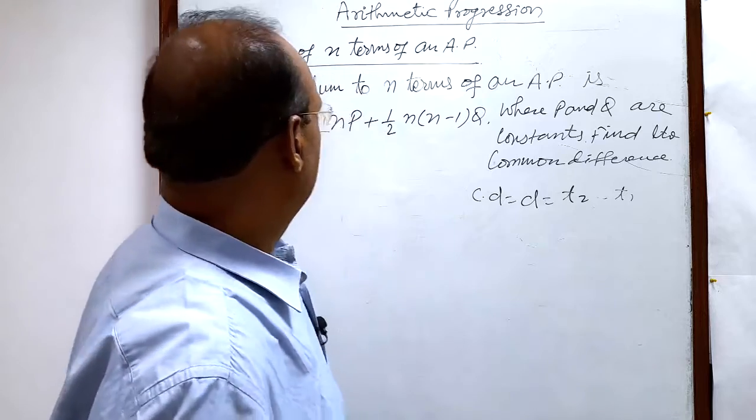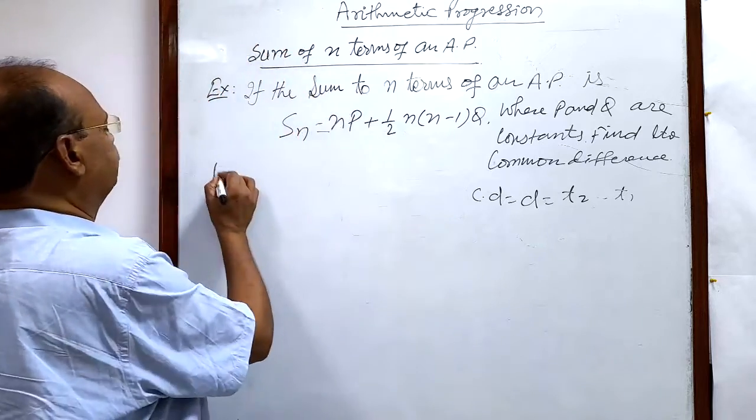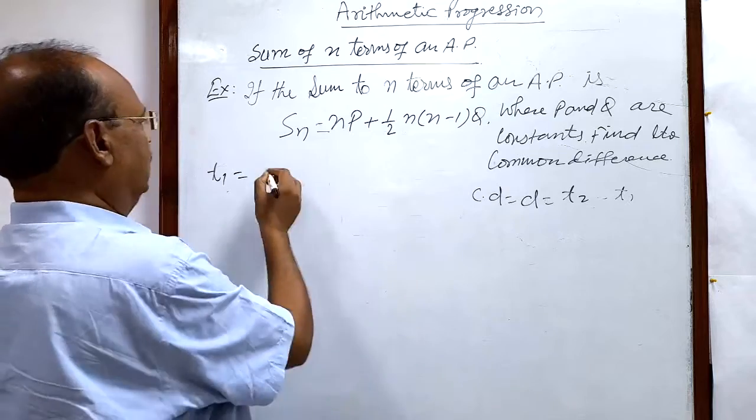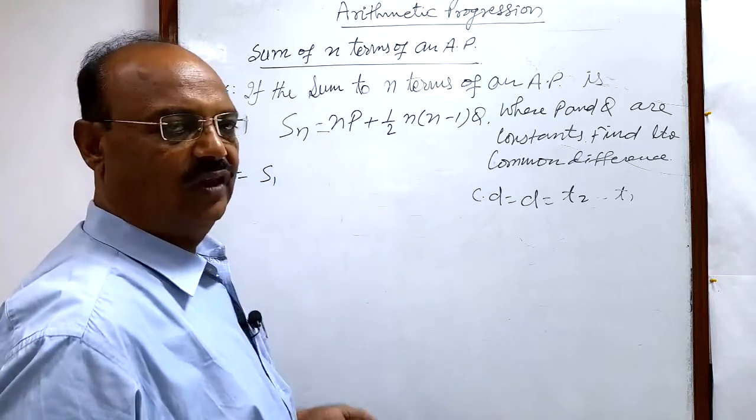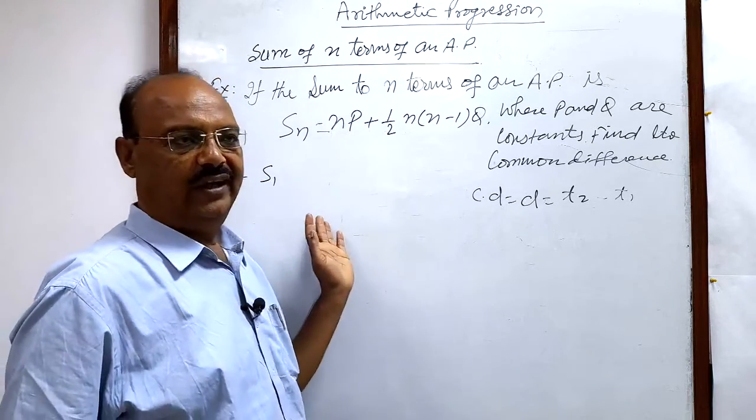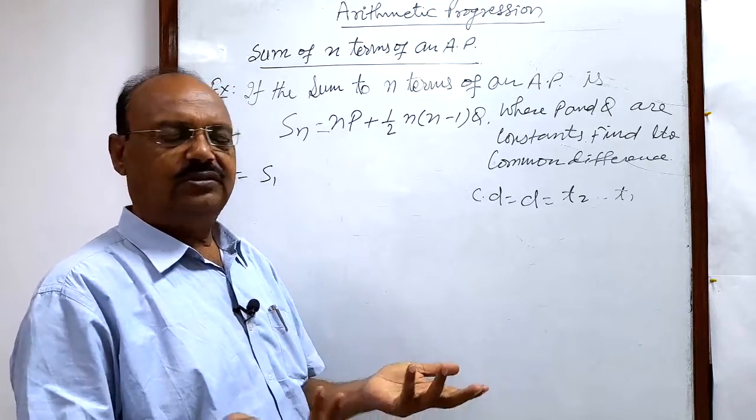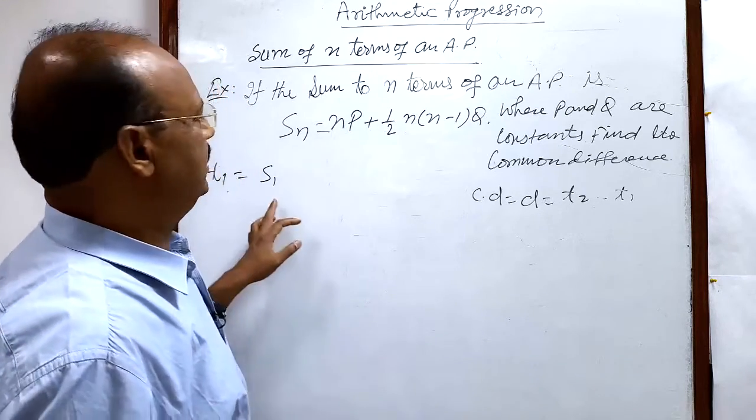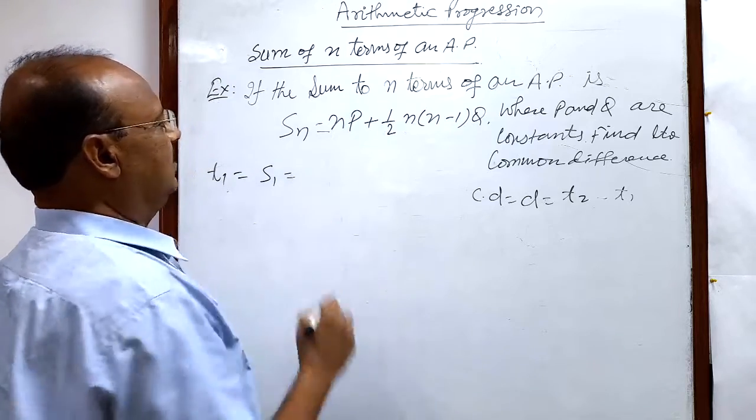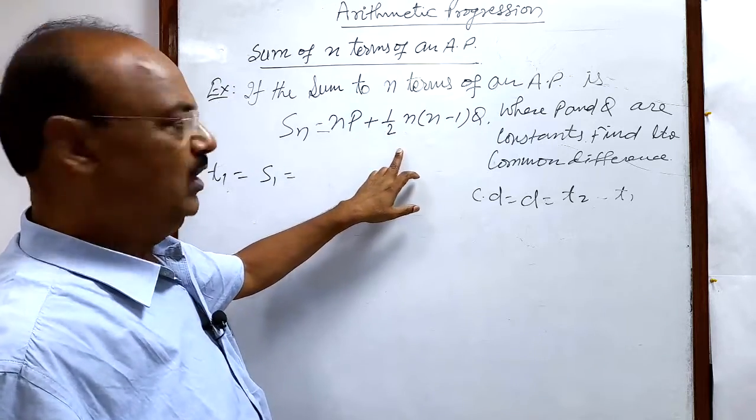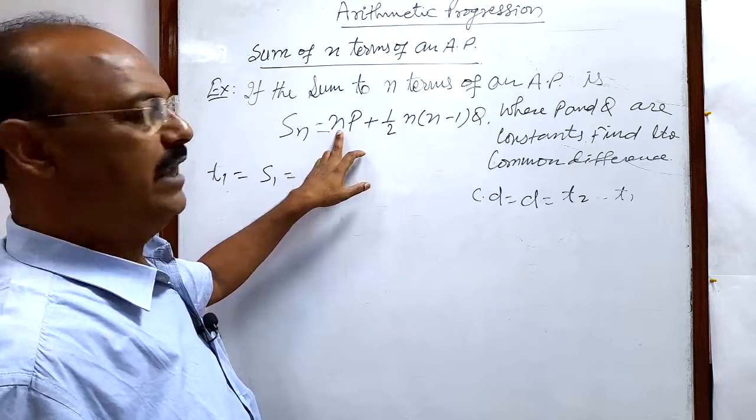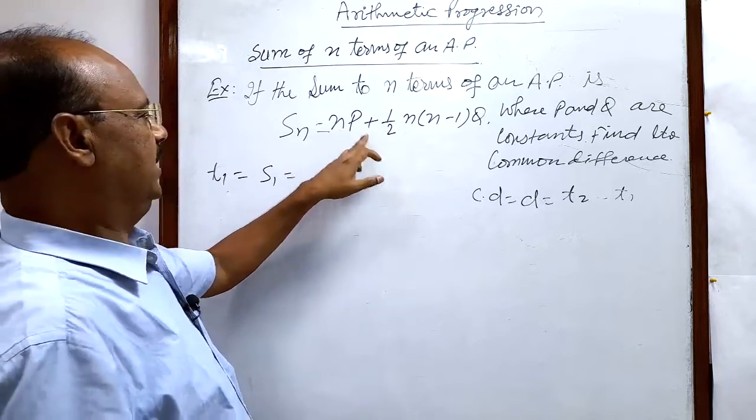So how to get t1? t1 and s1, both are same. t1 means first term, and s1 means sum of first term, so both are same. So t1 is equal to s1, and s1 we can get it from this formula. In place of n, simply we have to put 1, so 1 into p,